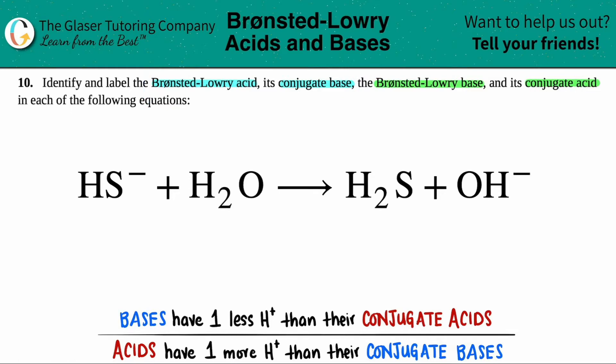The easiest way to do this is you got to pick the pairs first. I like to go from left to right, so I'm just going to pick the HS first. So I say to myself, which molecule on the product side looks very similar to HS? Yeah, it's H2S, right? Sulfur goes with sulfur. So these two will go together.